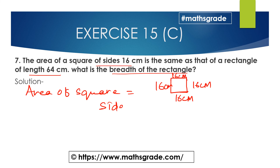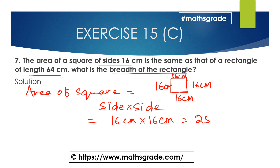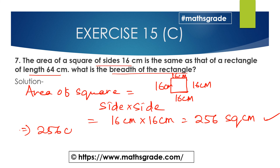We know area of a square is side multiplied with side. Area of the square is 16 centimeters multiplied with 16 centimeters, which equals 256 square centimeters. The area of the square is the same as that of the rectangle having length 64 centimeters. So area of the square, which is 256 square centimeters, equals area of the rectangle.